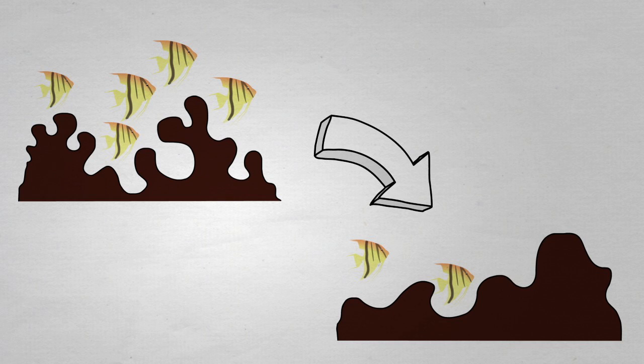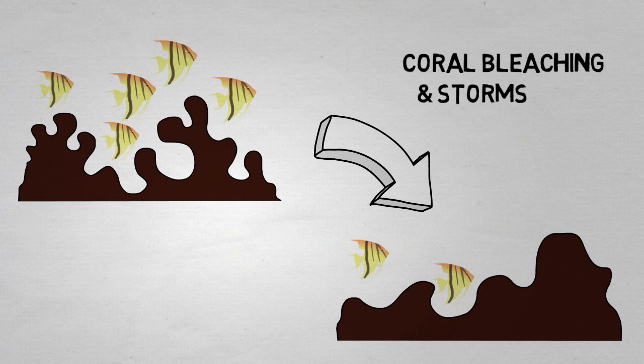We also know that climate change, which causes coral bleaching and greater storm intensities, is likely to drive the reef from a bumpy and intricate environment to a flatter, smoother one. This will have serious consequences for fish that rely on crevices in the reef for refuge from predators.